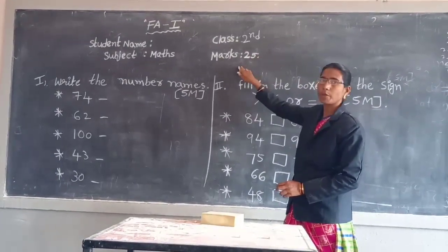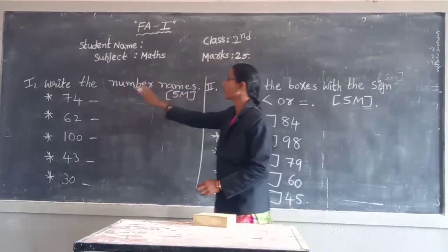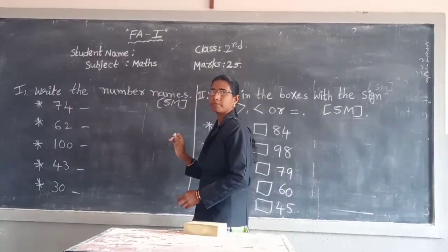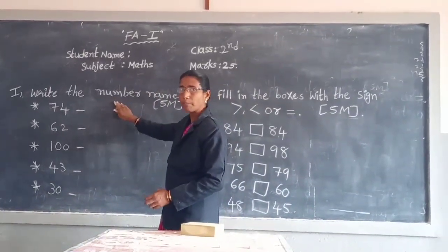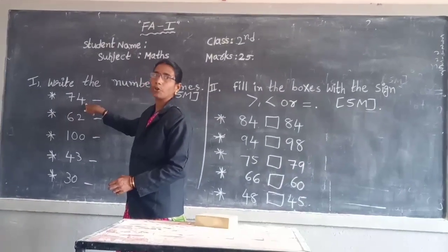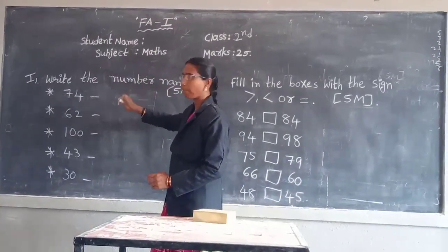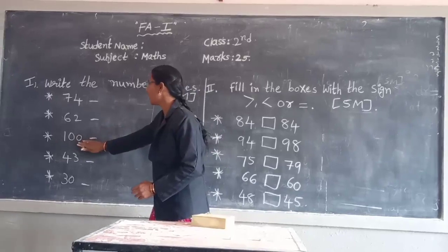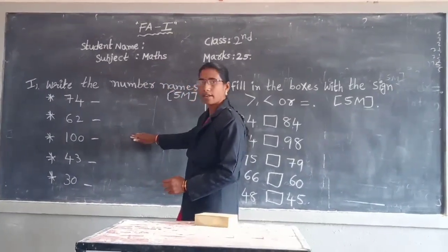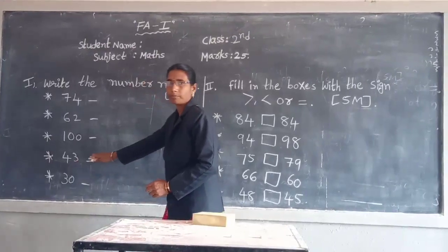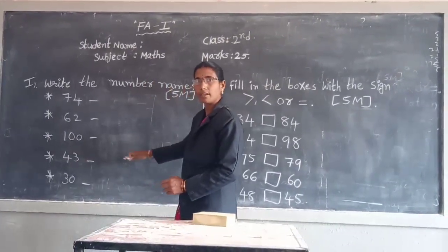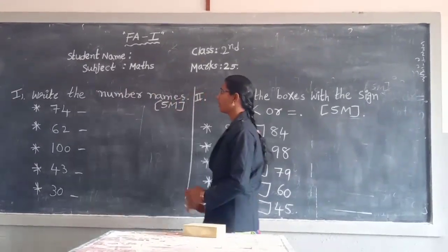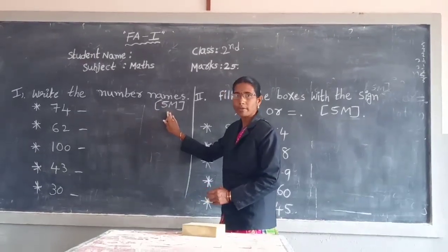Twenty-five marks. First means: write the number names. Seventy-four. Write the number names. Sixty-two. Write the number names. Next, hundred. Write the number names. Forty-three. Write the number names. Thirty. First means, total five marks.